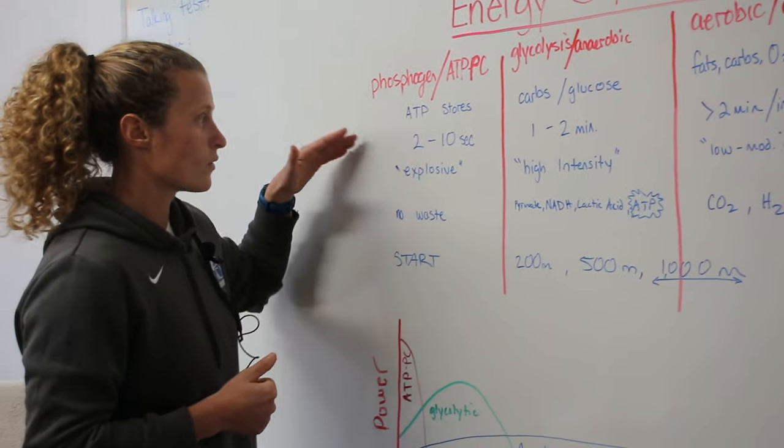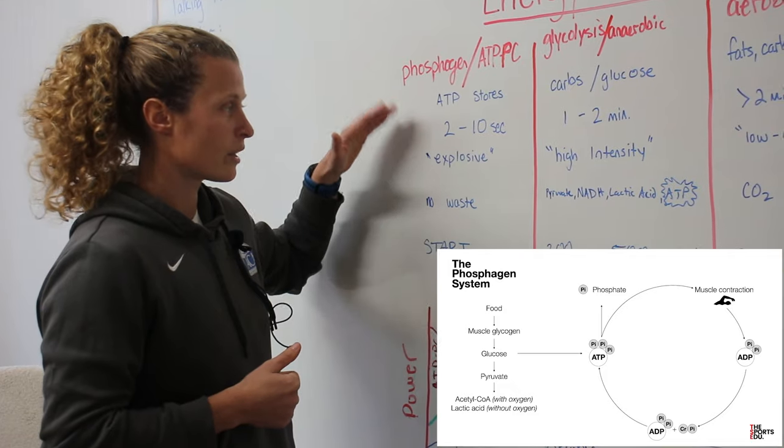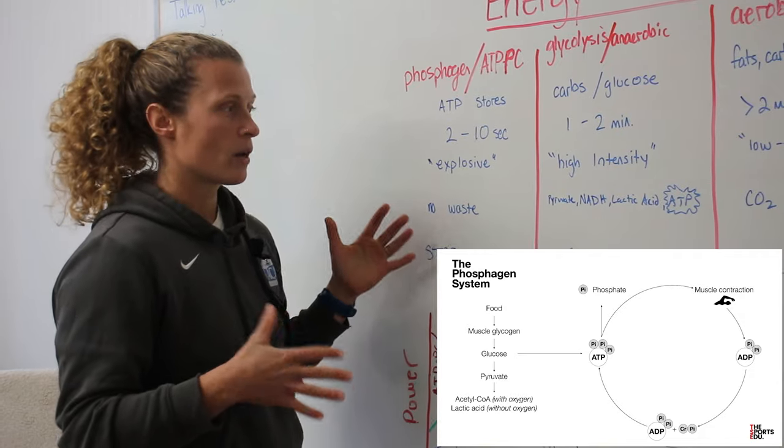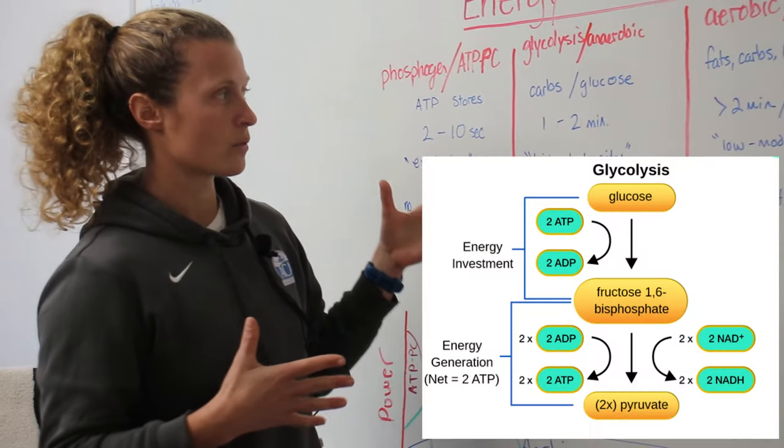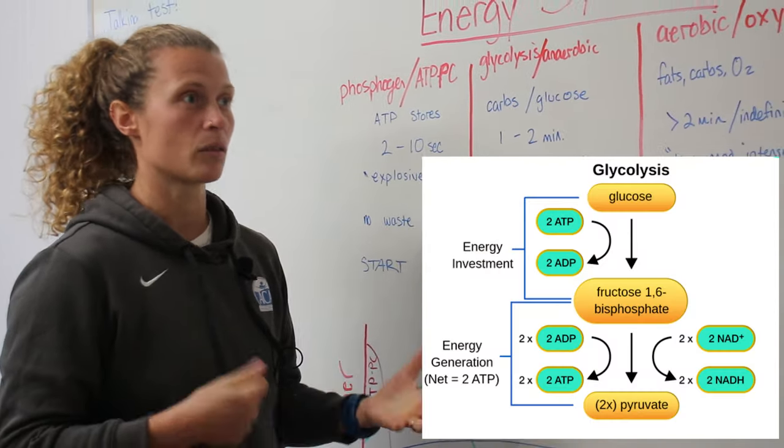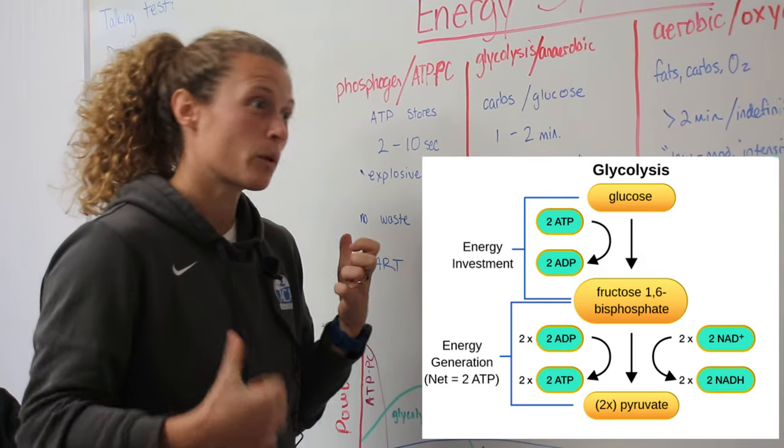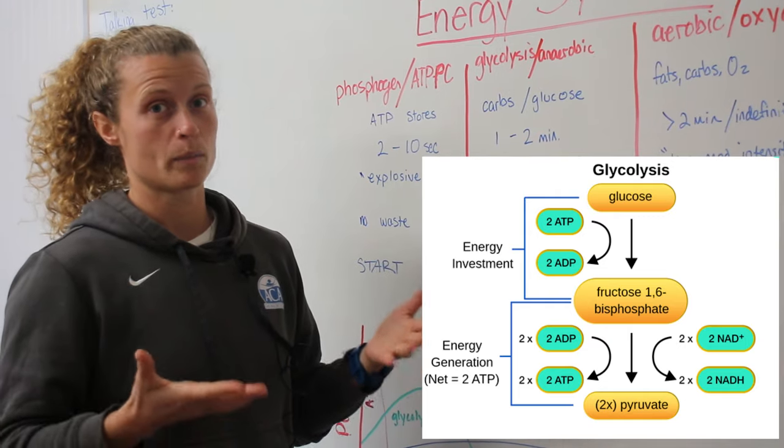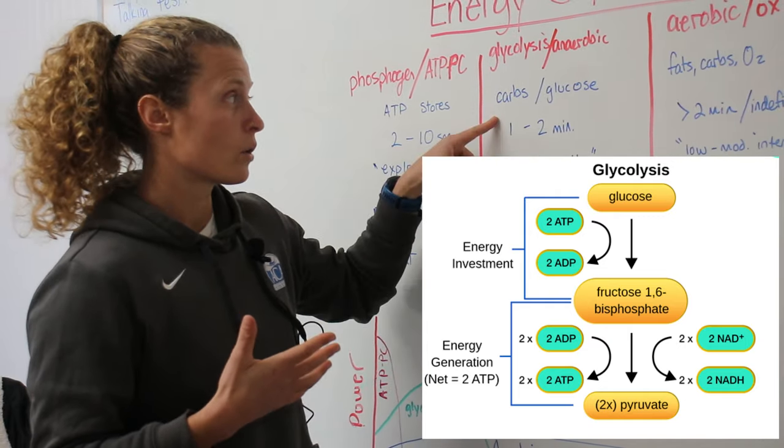For the phosphagen system, I want you to think more explosive, the first part of your race, so the start. There's no waste. But when you get to glycolysis, the reason why you feel so much pain at the end of a race and your muscles stop working and you feel like you're barely moving is because there's a lot of waste. There's byproducts because of using the glucose.